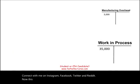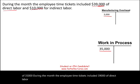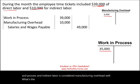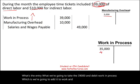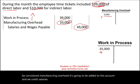We have manufacturing overhead of $3,000 and work in process of $35,000. During the month, employee time tickets included $39,000 of direct labor and $10,000 of indirect labor. Direct labor is considered work in process, and indirect labor is considered manufacturing overhead. The entry is to debit work in process $39,000 and debit manufacturing overhead $10,000, then credit salaries and wages payable — or cash if employees were paid immediately.